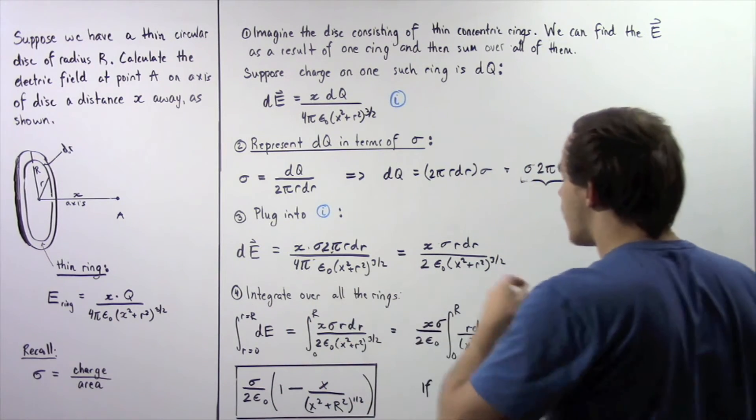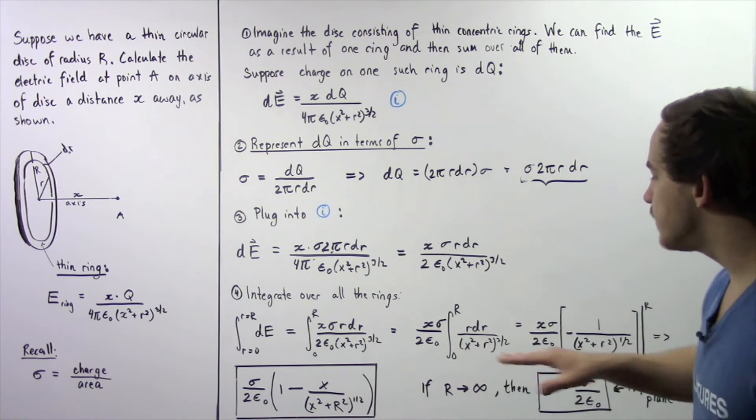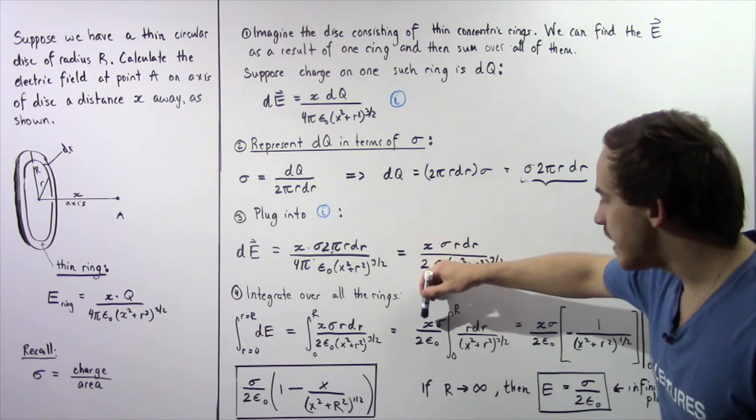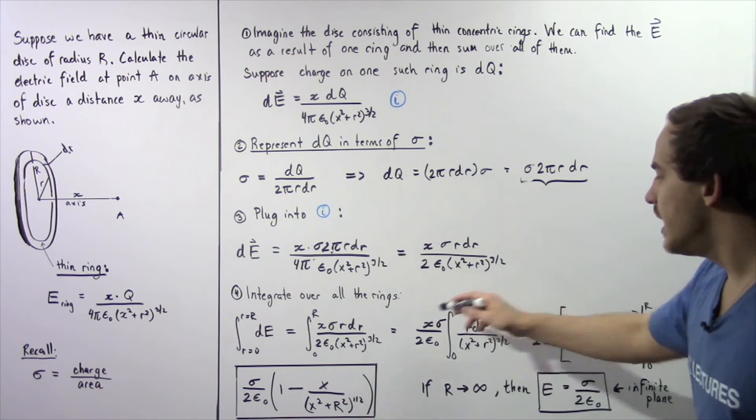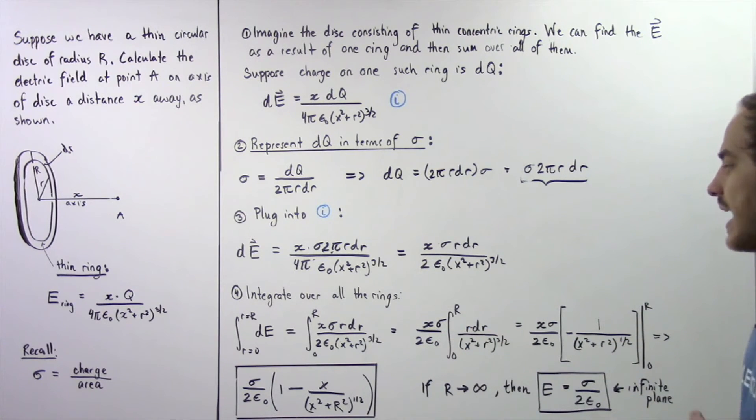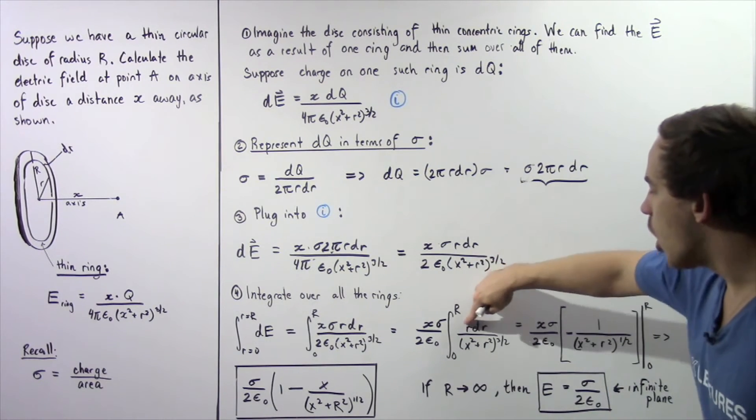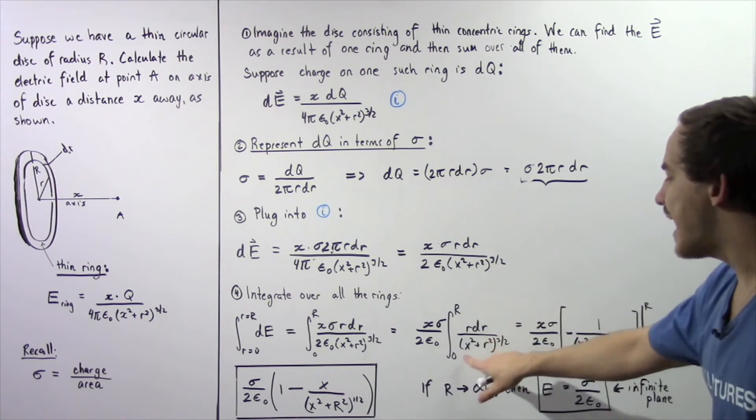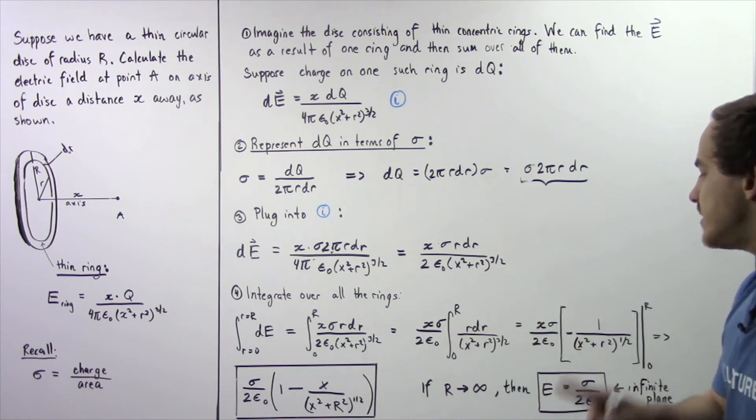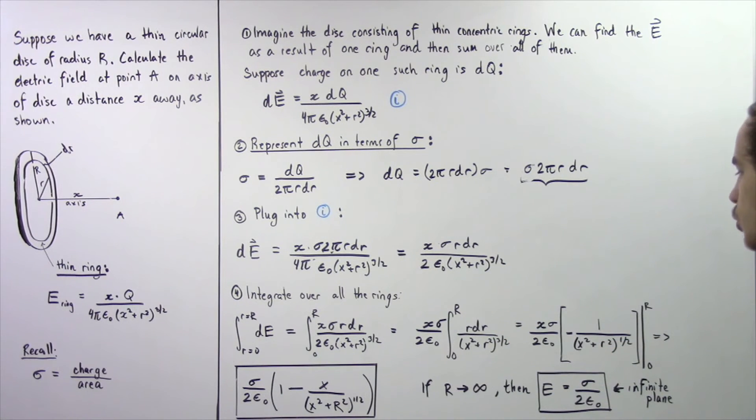Now let's bring some of our constants out. And we get the following result. We have x multiplied by sigma divided by 2 multiplied by epsilon naught and we integrate from 0 to uppercase R, R dr divided by x squared plus r squared raised to the power of 3 divided by 2.